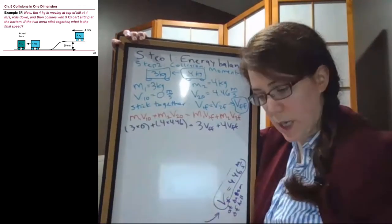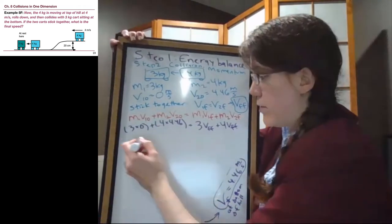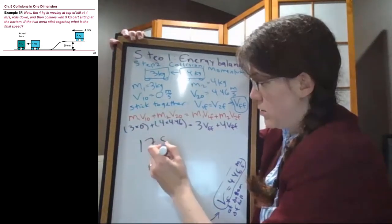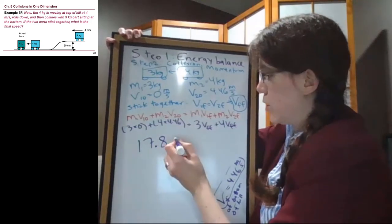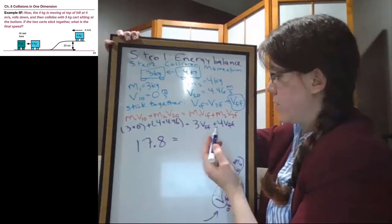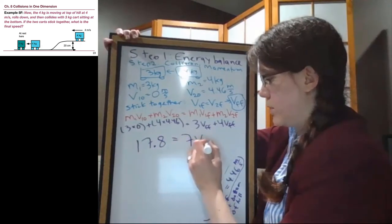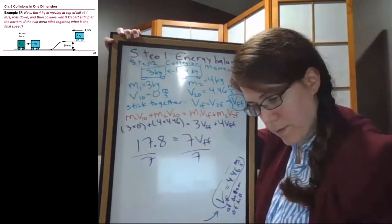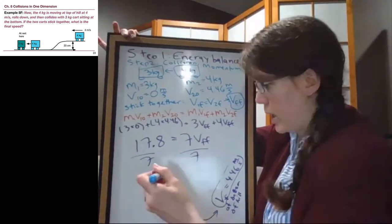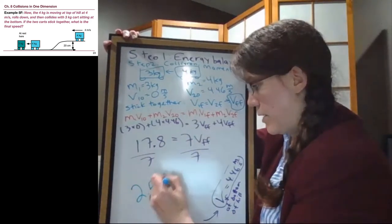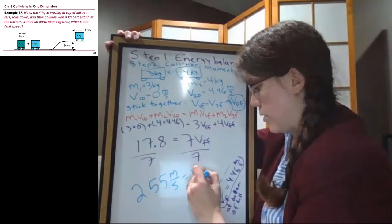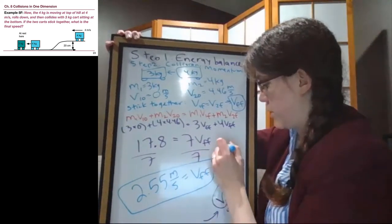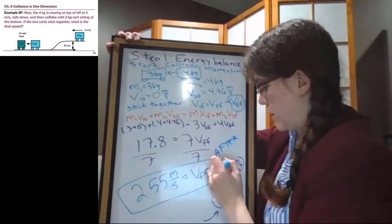So on the left side, we have 17.8, and on the right side, 3 V finals plus 4 V finals is 7 V finals. We divide both sides by 7, and we will get 2.55 meters per second is our final velocity, and this is now after the collision.